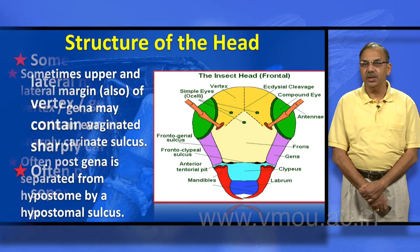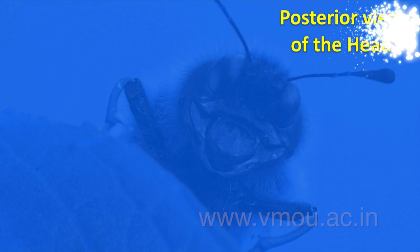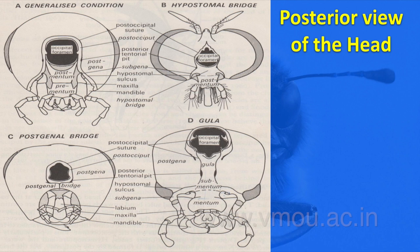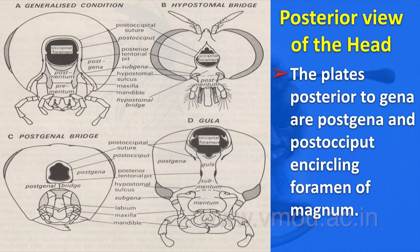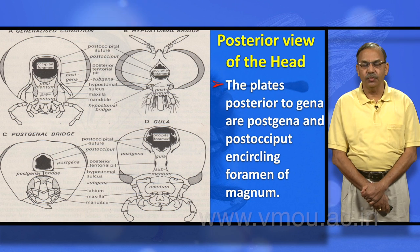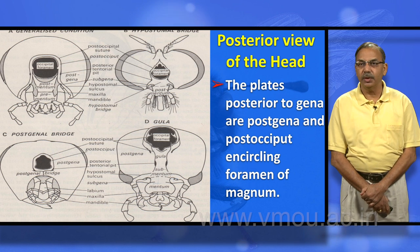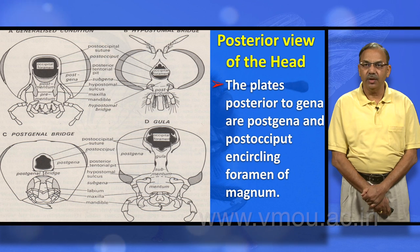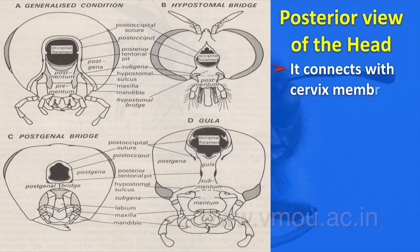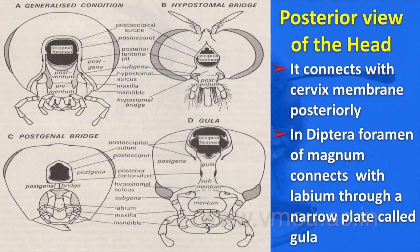In the posterior view of the head, the plates posterior to the gena are the post-gena and the occiput, circling the foramen magnum. The foramen magnum — as we also have one at the posterior end of our skull — connects with the cervix membrane posteriorly. In Diptera, the foramen magnum connects with the labium through a narrow plate called the gula, which is visible distinctly in diagram D; the remaining diagrams show no gula.